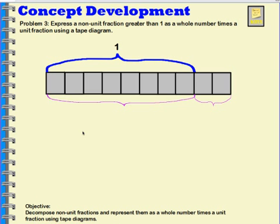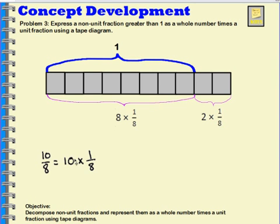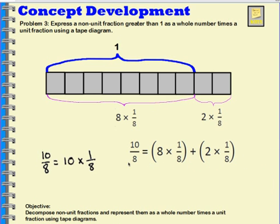Now using this same idea, let's think about what the multiplication would look like for each of these sections. We already said that ten-eighths was equal to ten times one-eighth, because I have my unit fraction of one-eighth ten times. I can mark off this whole, and I can see that this section is one-eighth eight times, and this section over here is one-eighth two times. So instead of saying ten times one-eighth, I could say that ten-eighths is equal to eight times one-eighth — that makes my whole. Eight times my unit fraction makes my whole, and two times one-eighth. If you figure those out and add them together, you would get ten-eighths.